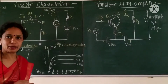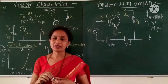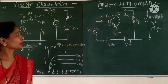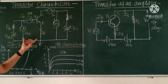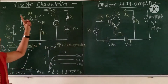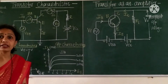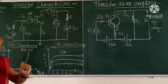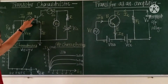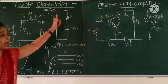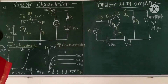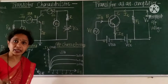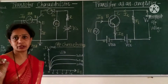Hello student. The next point related to the transistor is transistor characteristics. Here is the diagram to study the transistor characteristics in CE mode, means common emitter mode. This emitter terminal is common to both the input section and the output section. Therefore, this NPN transistor is connected in common emitter mode.